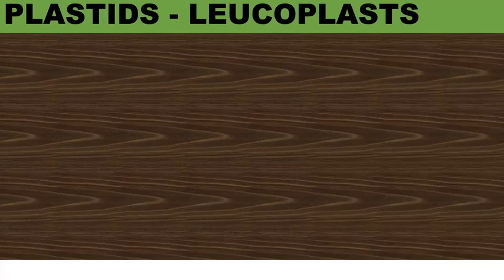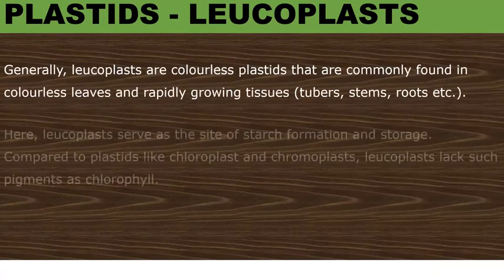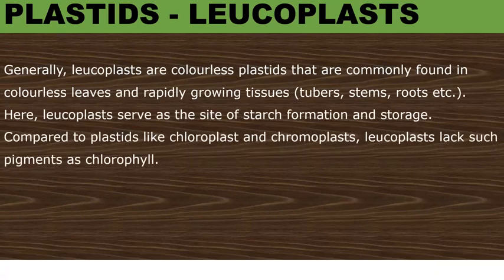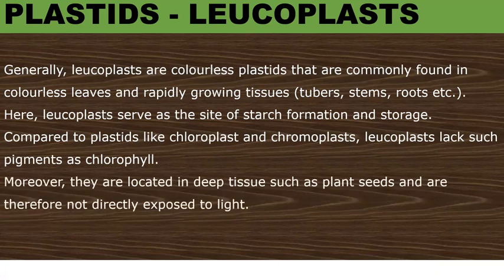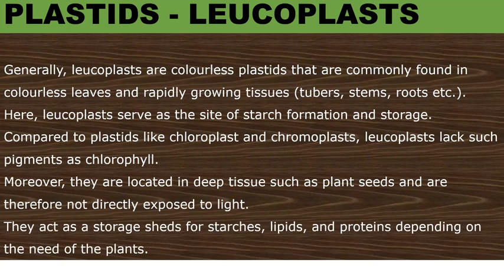Another plastid called leukoplasts. Leukoplasts are non-pigmented organelles which are colorless. Leukoplasts are usually found in most of the non-photosynthetic parts of the plant like roots. Compared to plastids like chloroplasts and chromoplasts, leukoplasts do not have any pigment in them. Moreover, they are located in deep tissue such as plant seeds and are therefore not directly exposed to light. Leukoplasts act as a storage shed for starches, lipids, and proteins depending on the need of the plants.